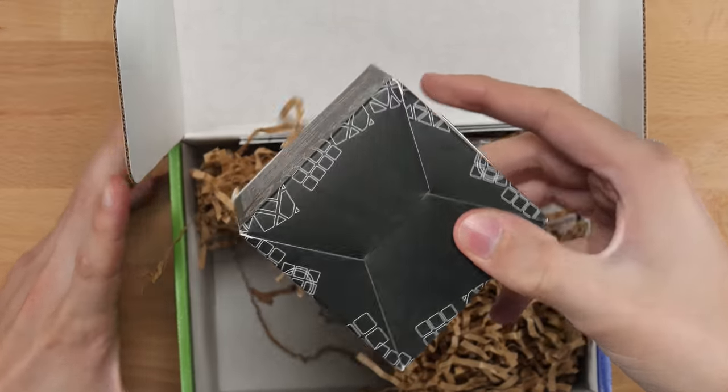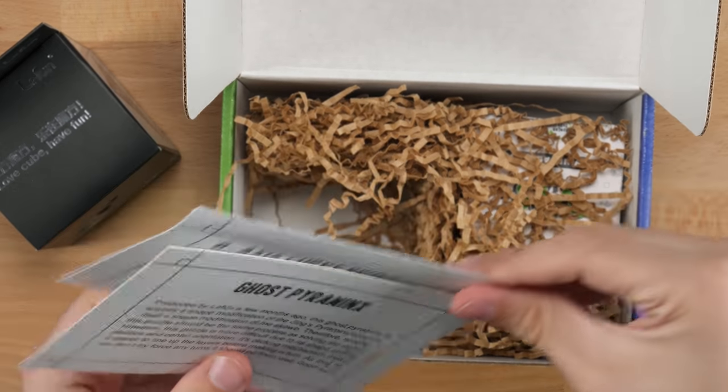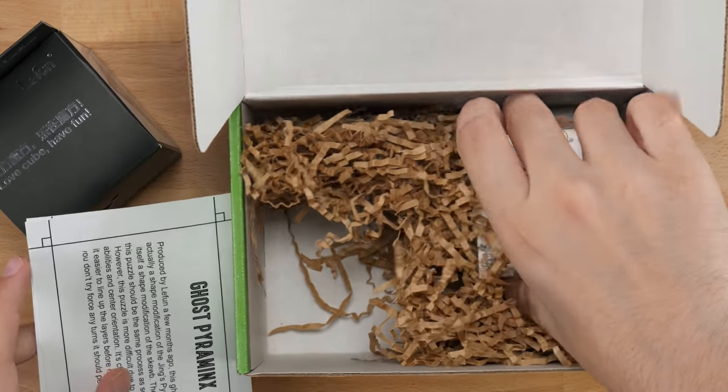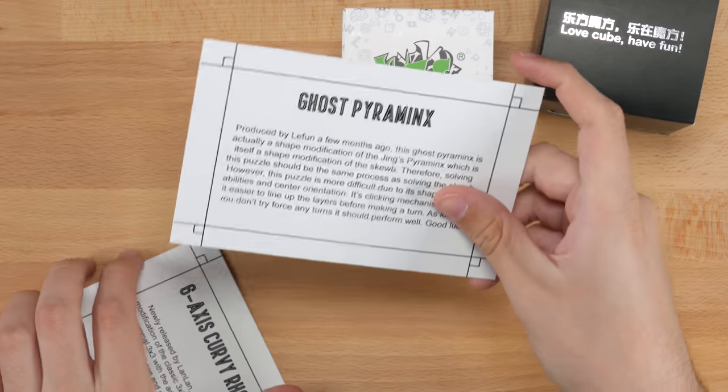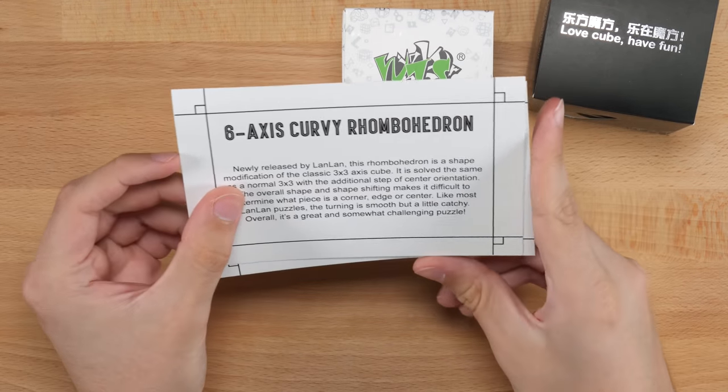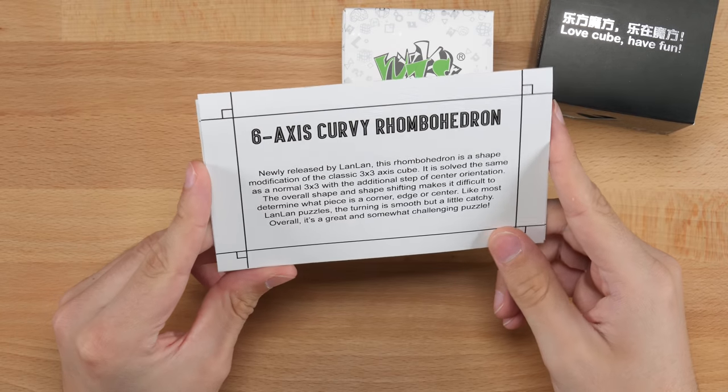Oh boy, what do we have here? Oh, there's another thing. I didn't even see that. Okay, so in this box, we have two puzzles. We have the Ghost Pyraminx and the Six Axis Curvy Rhombohedron.